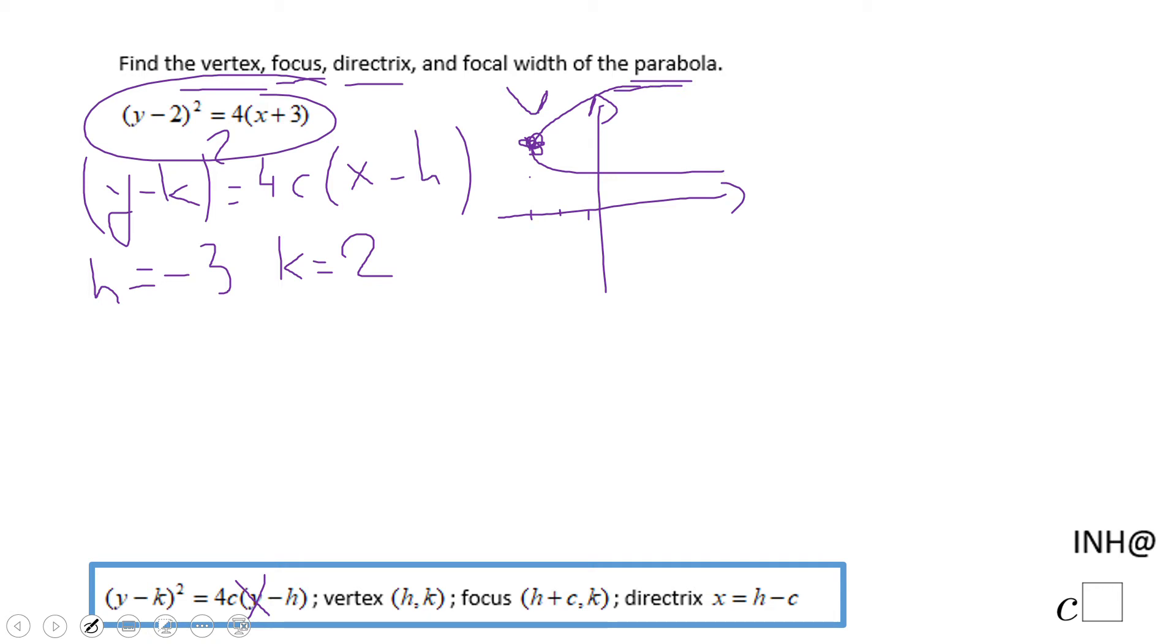For the focus, I'm going to need to set this 4 equal to this 4c, which allows me to find c as being 1. Which means I'm going to move one unit inside and that will be the focus.